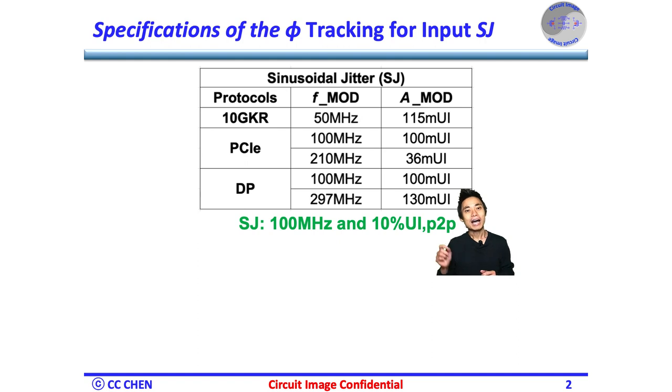Therefore, in our following tracking images, we pick a reasonable 100 MHz and 10% UI SJ as our case study, which should cover most of the specifications reasonably.